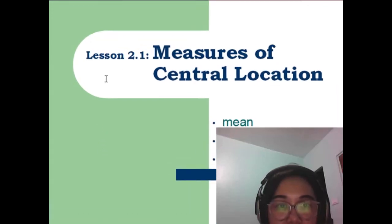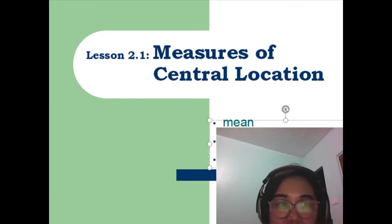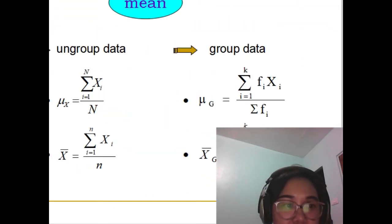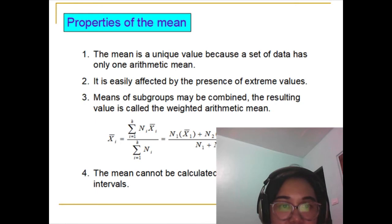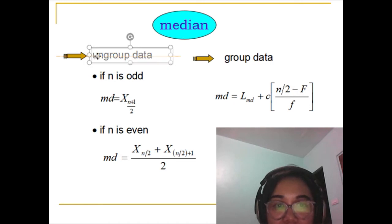We will continue our discussions on the measures of central location. This time we will calculate the median value given a set of data. We are here calculating the median value given ungrouped data.